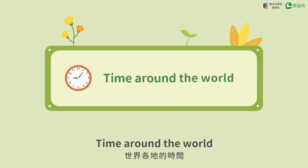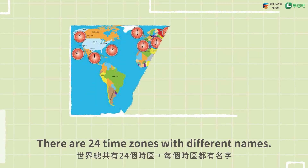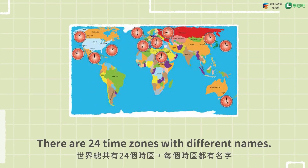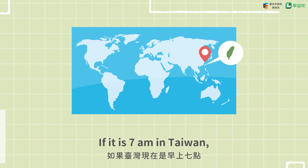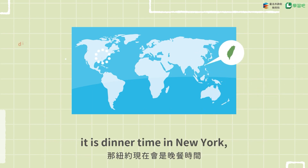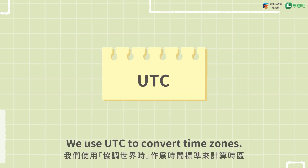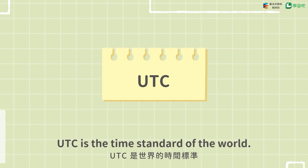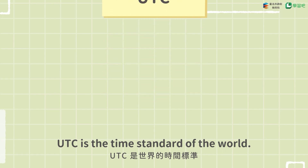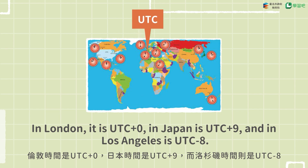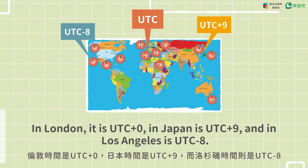Time around the world. There are 24 time zones with different names. If it is 7 a.m. in Taiwan, it is dinner time in New York, and it is afternoon in Berlin. We use UTC to convert time zones. UTC is the time standard of the world. In London, it is UTC plus 0. In Japan, it is UTC plus 9. And in Los Angeles, it is UTC minus 8.